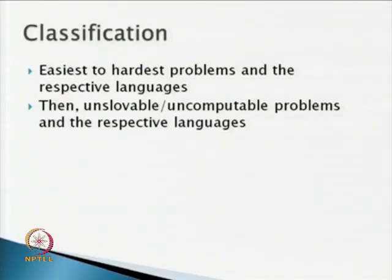Whenever a problem gets solved, there will be some easy problems and some hard problems. We classify problems into categories based on their complexity or hardness. Since problems are given in terms of language, we also consider the corresponding languages. Some problems cannot be solved at all by any computing device — these are unsolvable or uncomputable problems — and we examine the corresponding languages for those. Since there are various models of computation and problems are given as formal languages, corresponding to each automaton we have a class of languages.